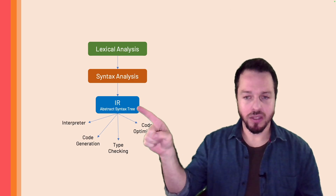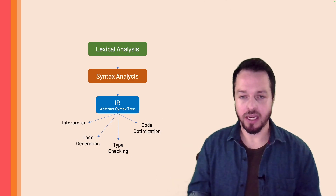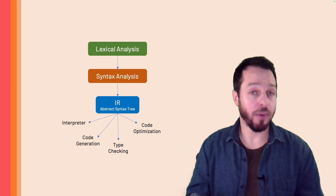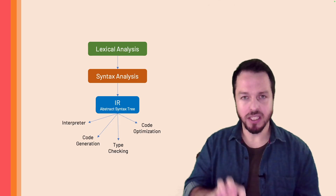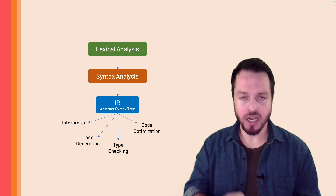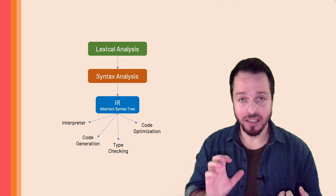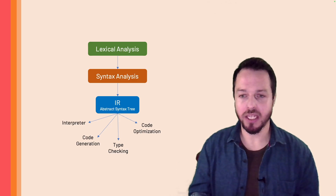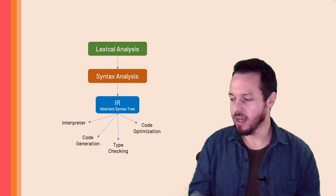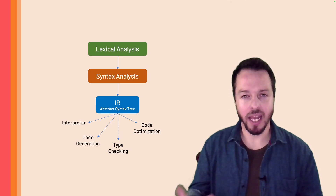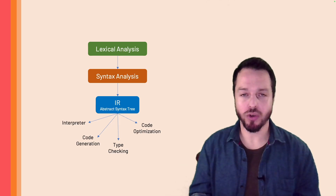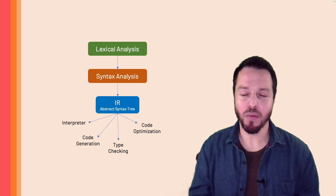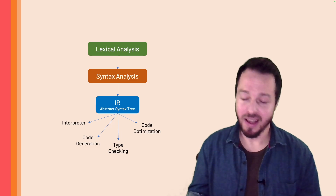This AST is at the center of the stage, because based on this model in memory we're going to run several things. We can generate and run an interpreter by visiting the nodes of the AST. The first thing we'll do is create an interpreter for our language just based on the AST, using Python as the host language.